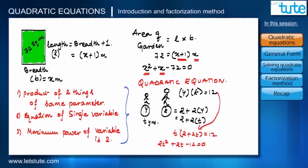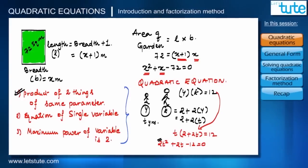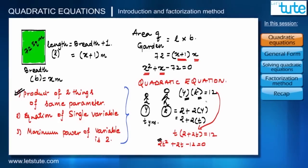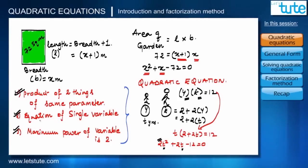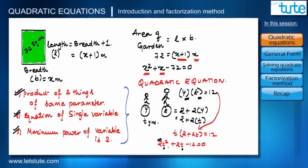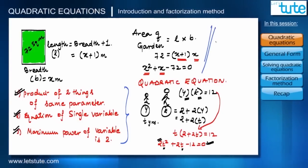In this equation we can see: first, we got it by taking the product of two things of the same parameter — both ages are in years. Second, it is a single-variable equation in t. Third, the maximum power of t is two. This equation satisfies all three important points, therefore it is also called a quadratic equation.